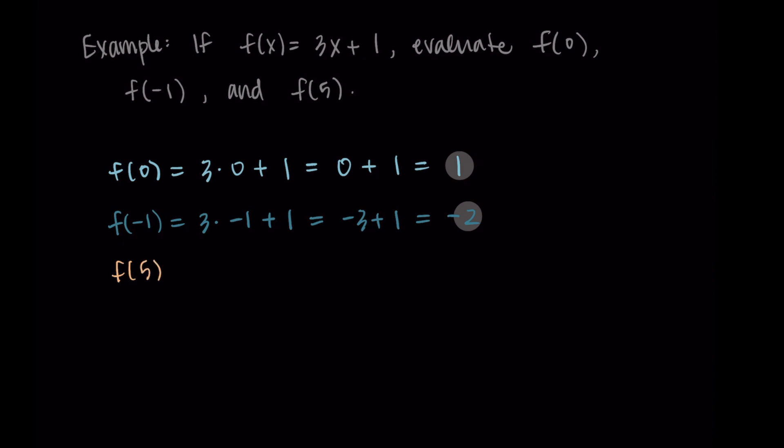Now our last one, f(5). We replace x with 5 because 5 is our input. So we're doing 3 times 5 plus 1. That is 15 + 1, which is 16. So f(5) = 16.